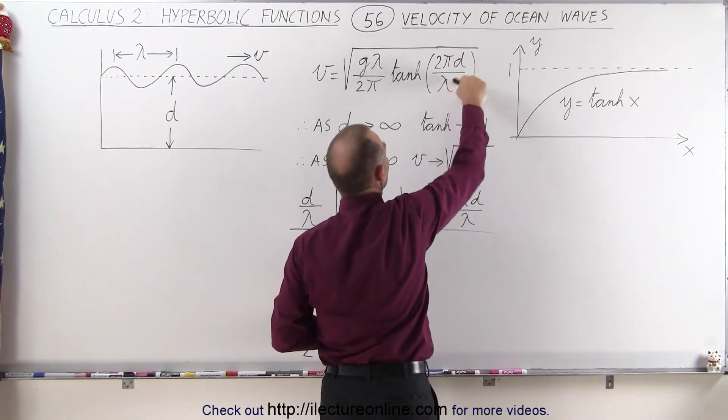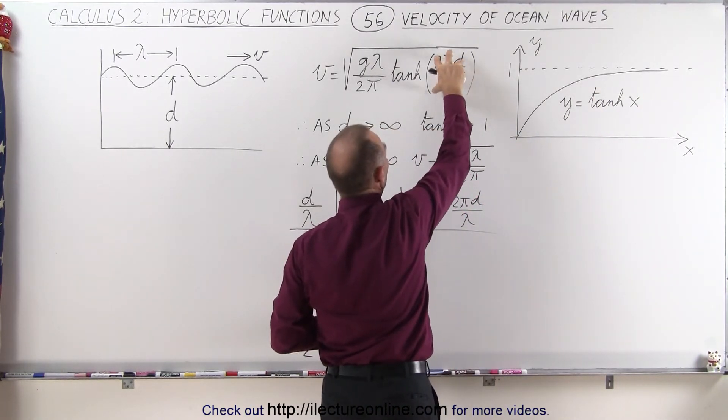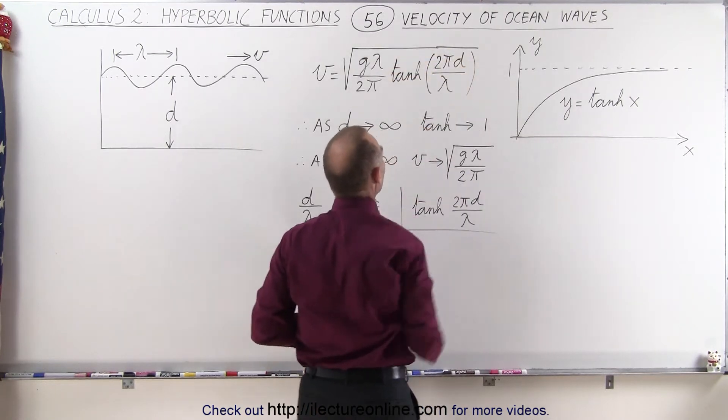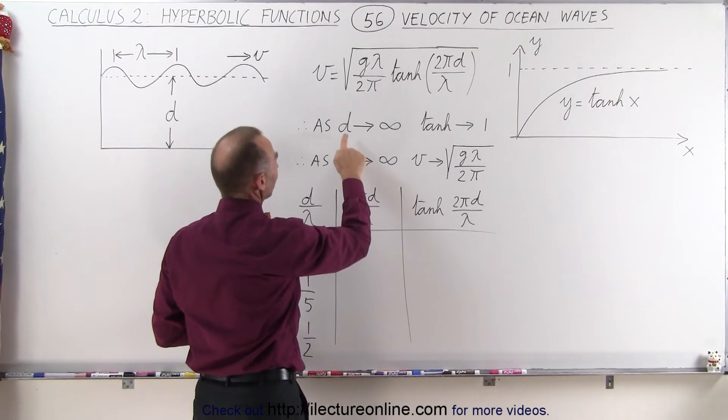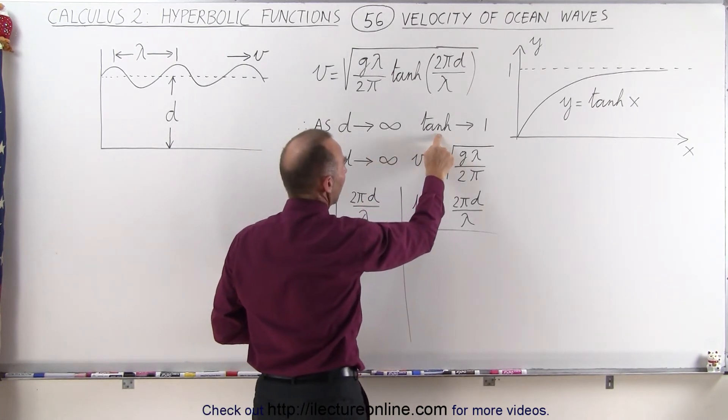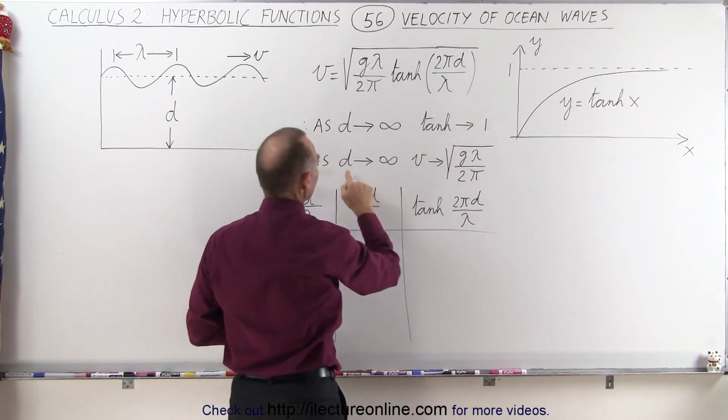So this value right here, if this becomes equal to a large value, the hyperbolic tangent of that value will then equal 1. In other words, as d, the depth of the ocean, becomes very large, the hyperbolic tangent goes to 1.